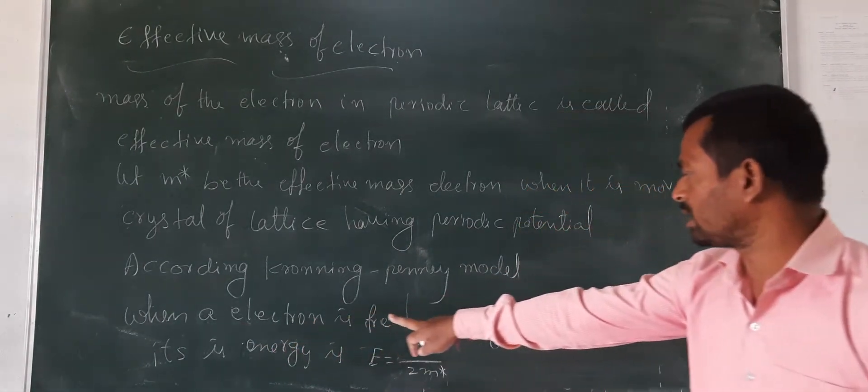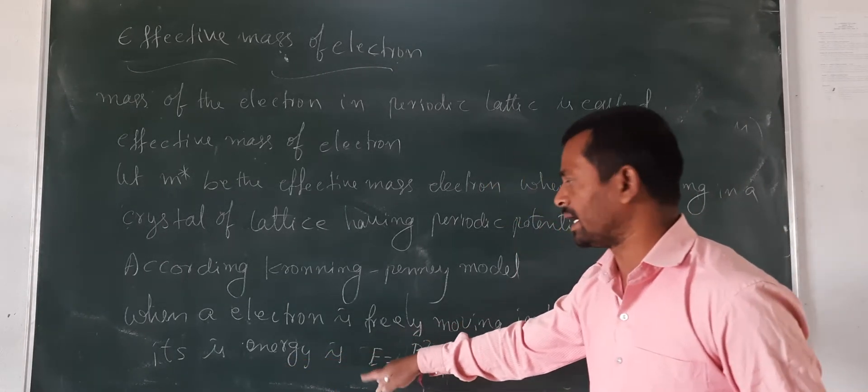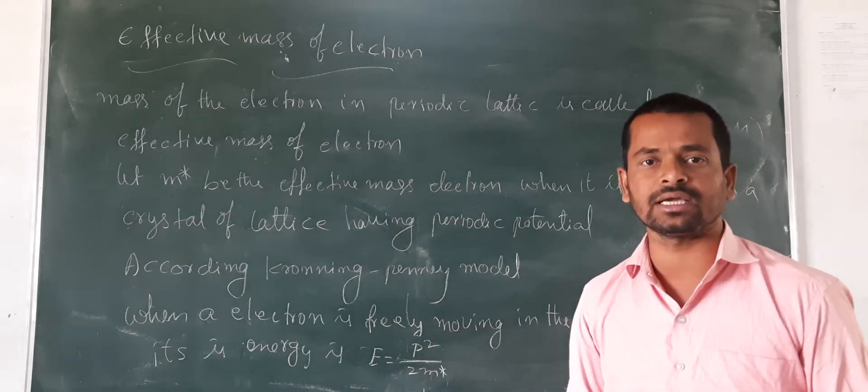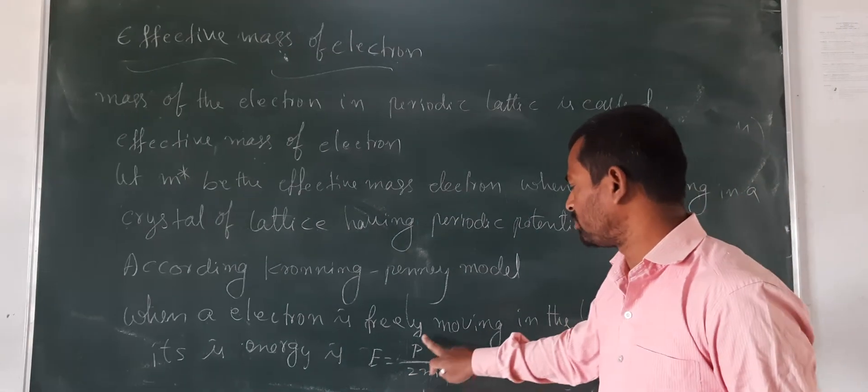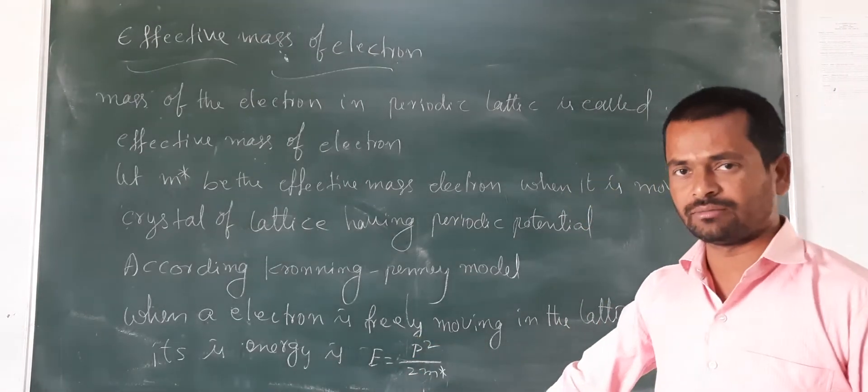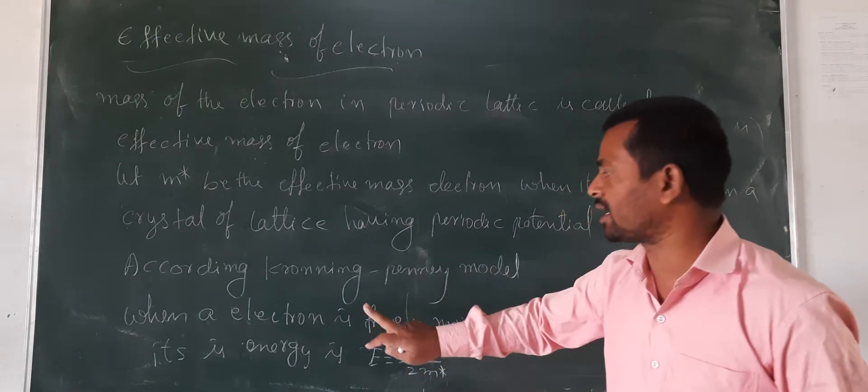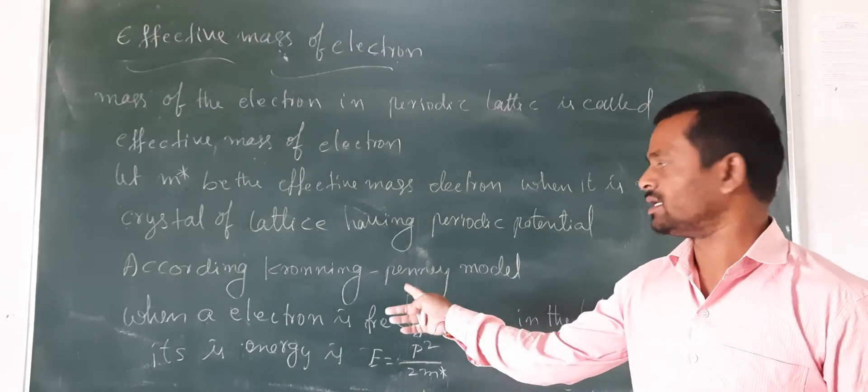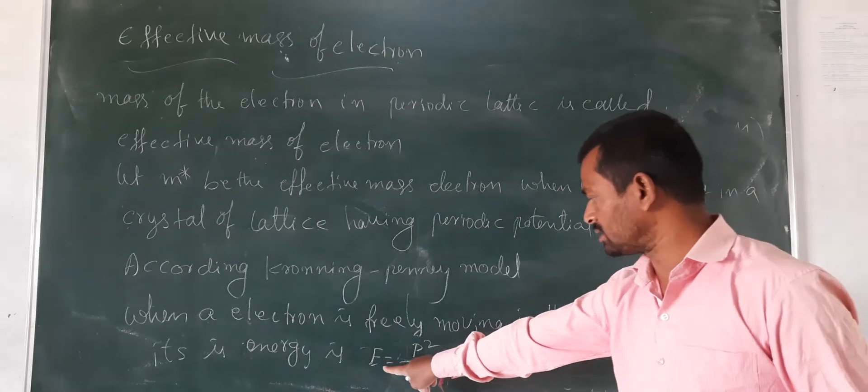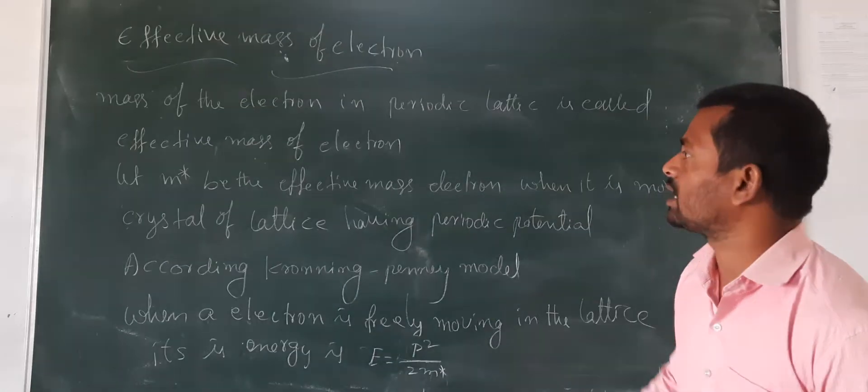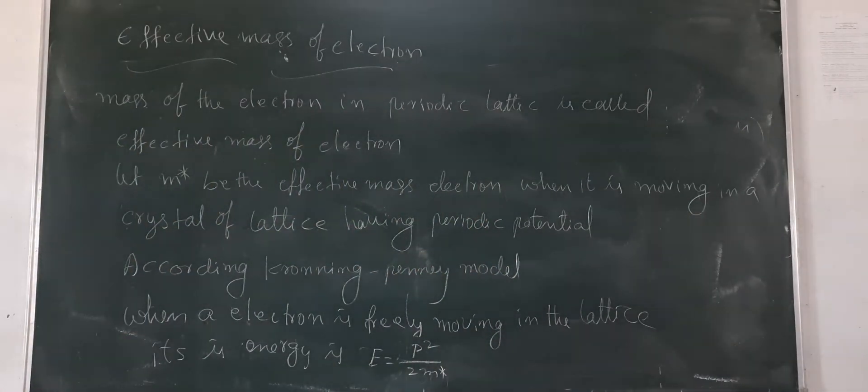When an electron is freely moving in the lattice, its energy is kinetic energy. Kinetic energy expression everybody knows that is E equals p squared by 2m. Kinetic energy in terms of momentum. This is also taken from the Kronig-Penney model, in the second case. So this is the things about the effective mass of electrons, please take screenshot.